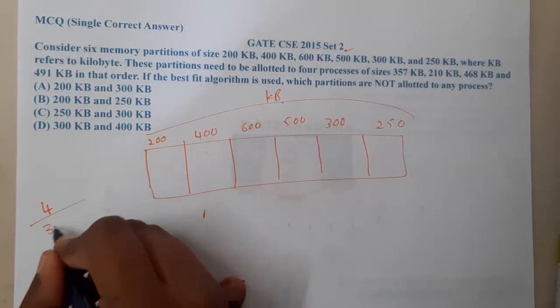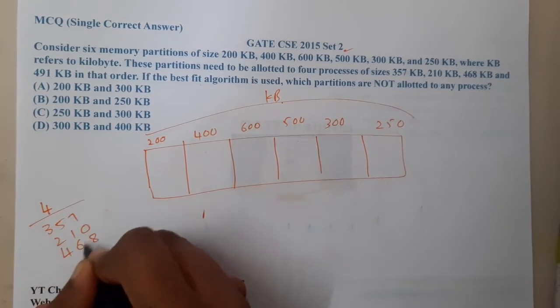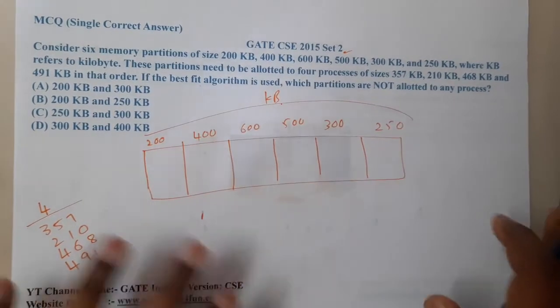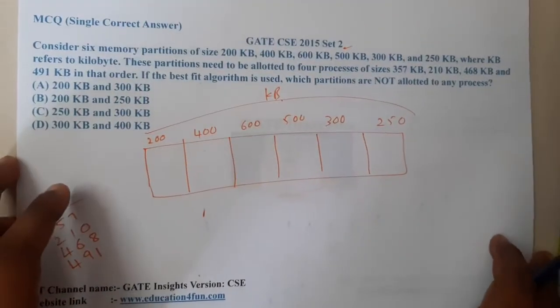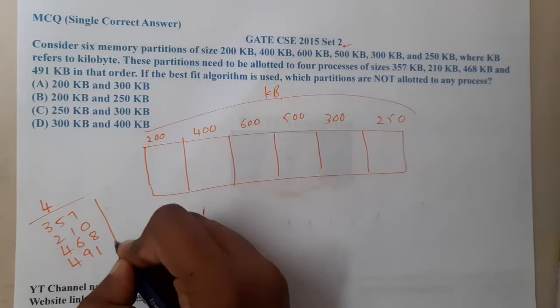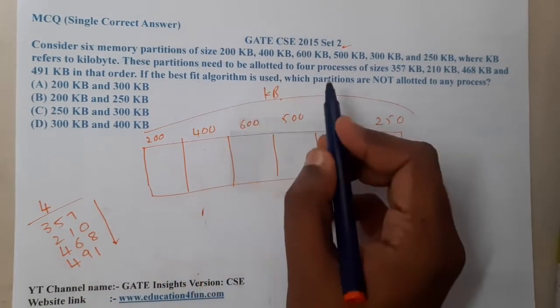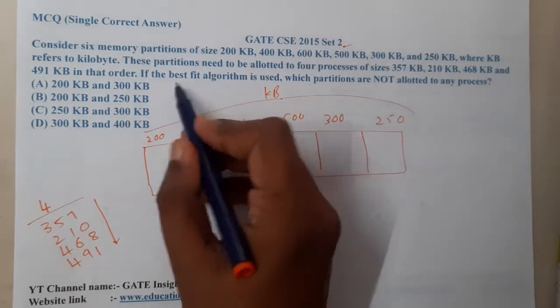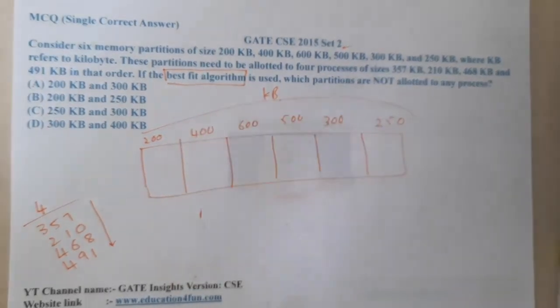These partitions need to be allocated for four processes of sizes 357 KB, 210 KB, 468 KB, 491 KB in that order. If the best fit algorithm is used, which partitions are not allocated?